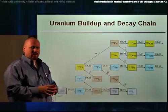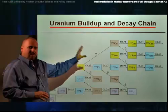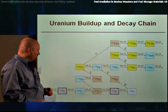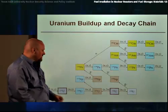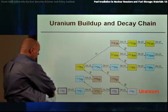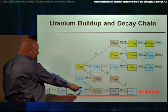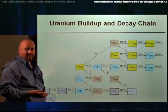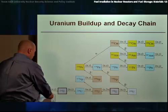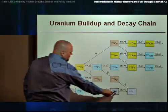This picture shows the basic buildup and decay chain you would expect to see for uranium. Displayed here is a set of boxes that shows each of the individual isotopes that would exist for an element. For the element uranium, you could have U-234, U-235, U-236, U-237, U-238, or U-239. The only naturally occurring isotopes of uranium are U-234, U-235, and U-238.